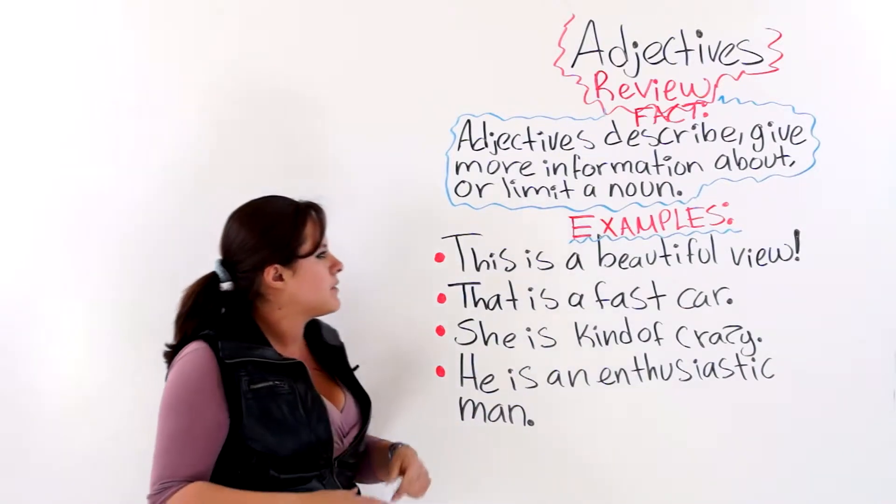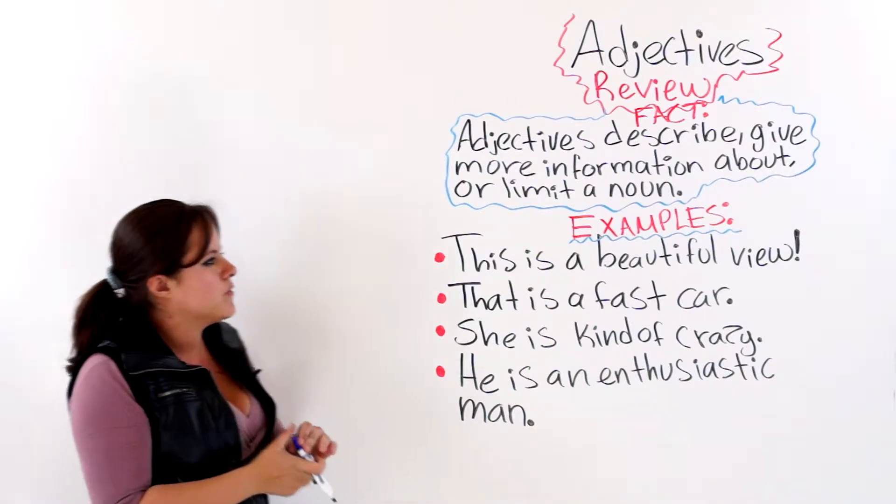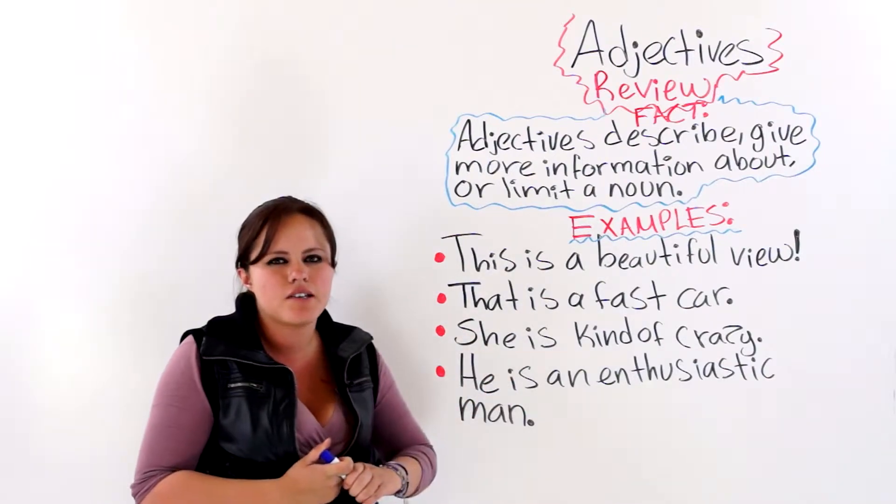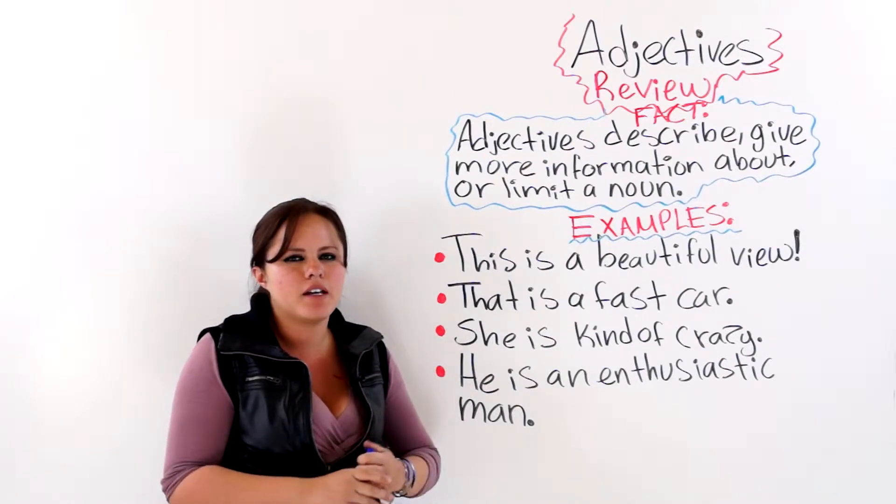I have four examples here written on the board, and I will explain to you one by one. But before we begin, you must also know that adjectives answer three questions: How many? Which one? And what kind?